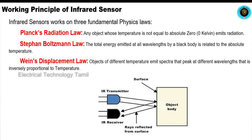The second principle is Stefan-Boltzmann: the total energy emitted at all wavelengths by a black body is related to absolute temperature. The third one is Wien's Displacement law: objects of different temperatures emit spectra that peak at different wavelengths, which is inversely proportional to temperature.